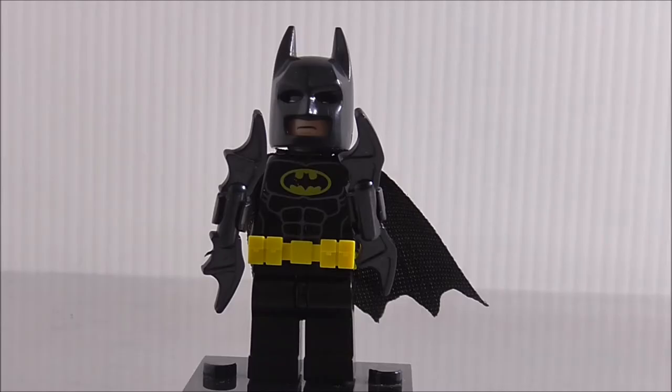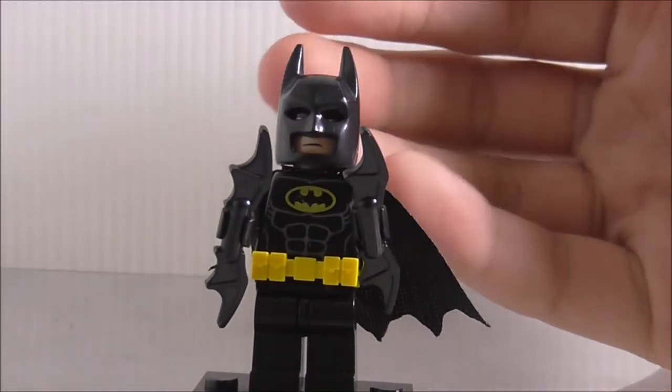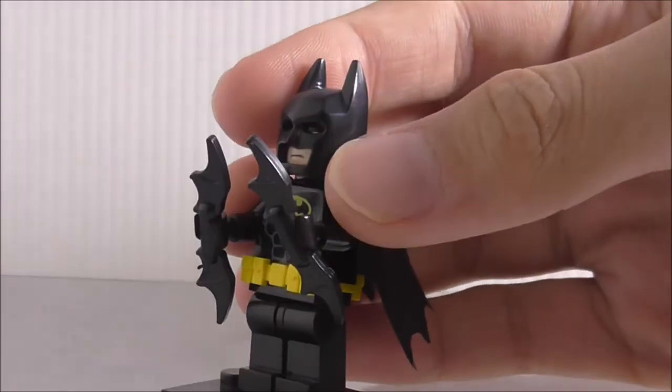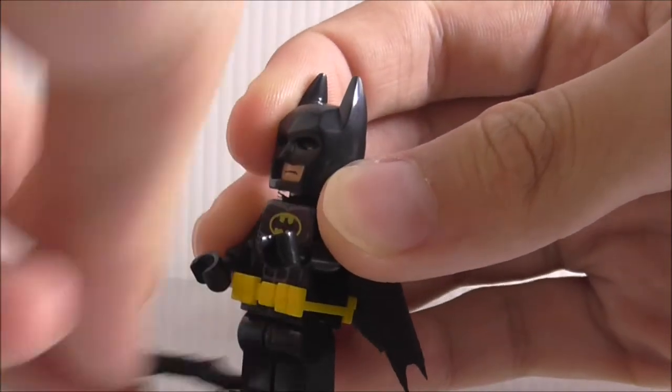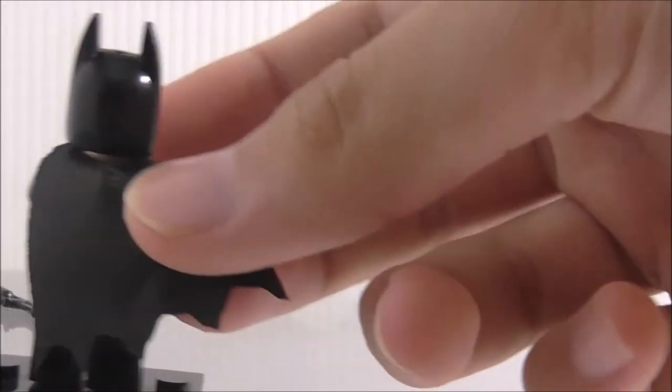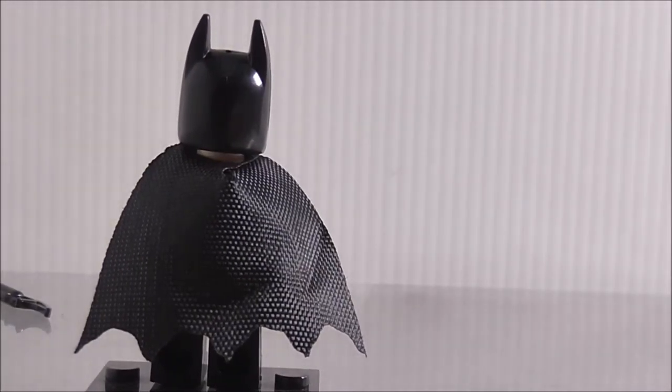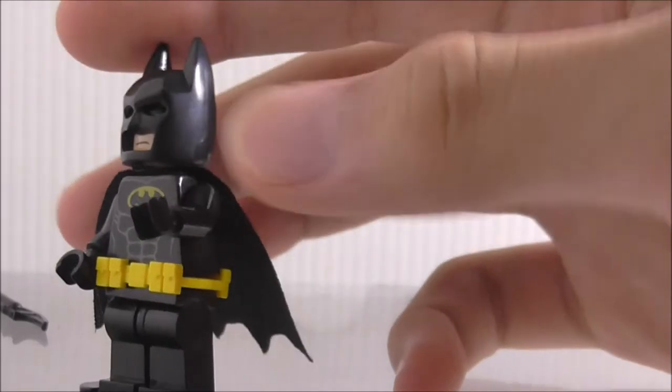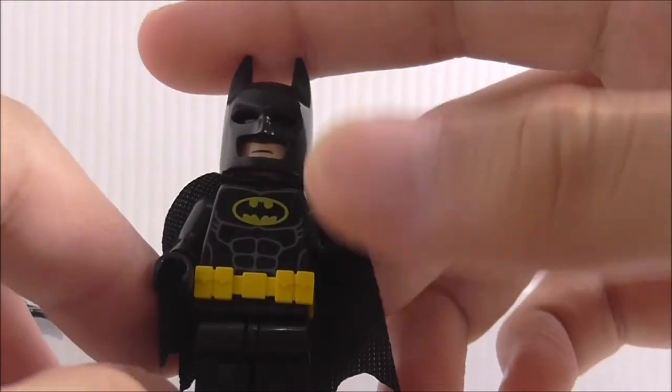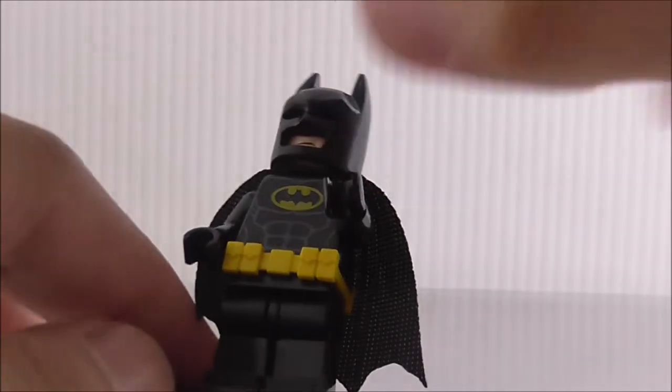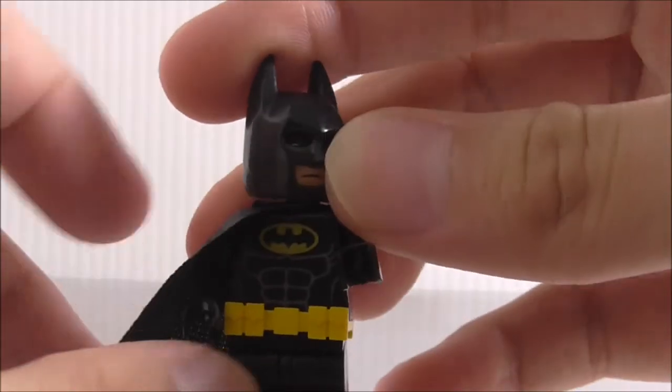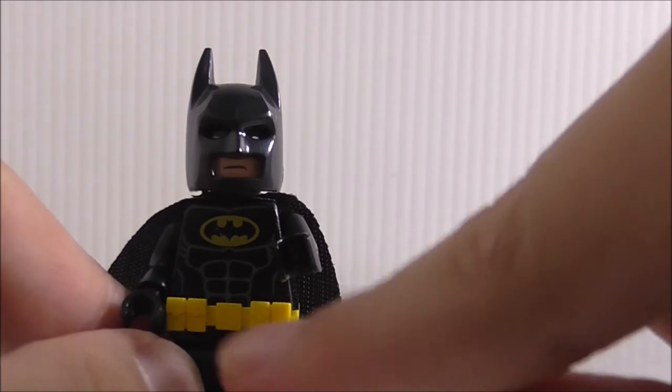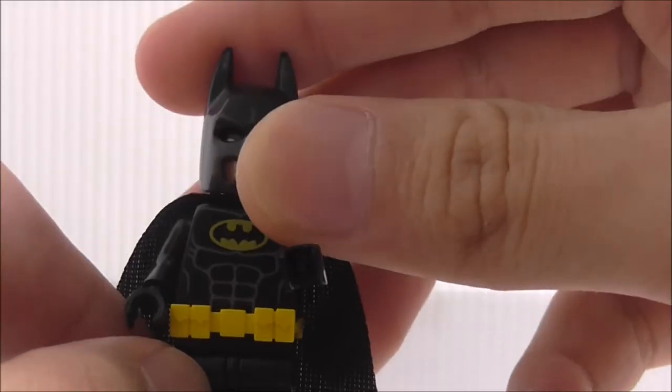The first figure is Batman of course. It's just like all the other Batmen that we got in all the Batman movie sets. Obviously he's armed with two batarangs. His cape here is kind of different because I think I cut it in half. The torso printing is pretty simple, you got the Batman logo in the middle and you got his utility belt which is another mold.